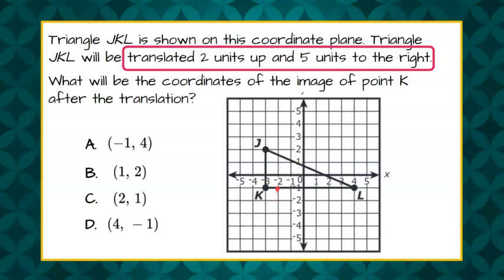We identify point K of our triangle in our coordinate plane and we are going to go two units up—one, two—and then five units to the right: one, two, three, four, five.